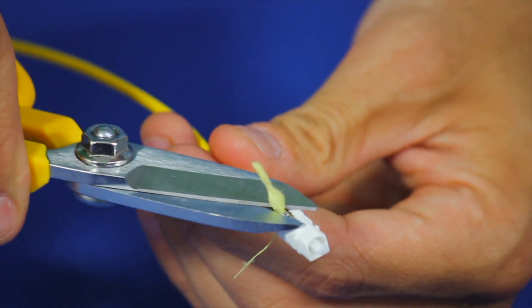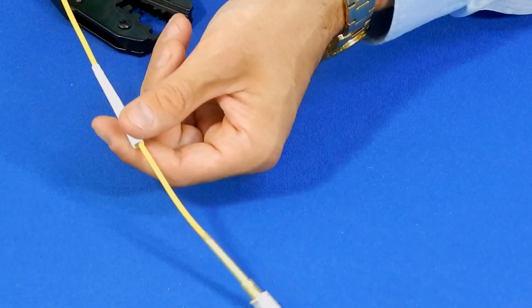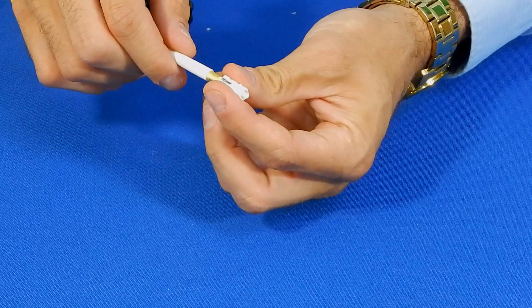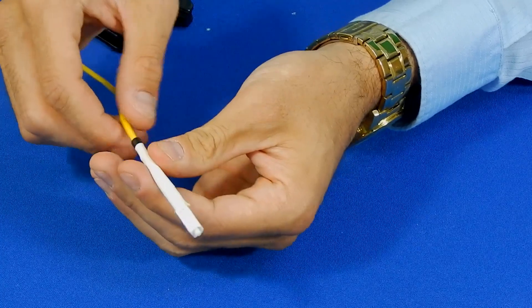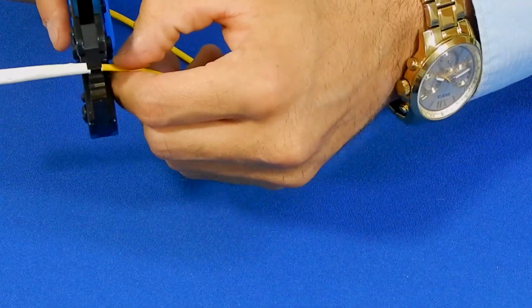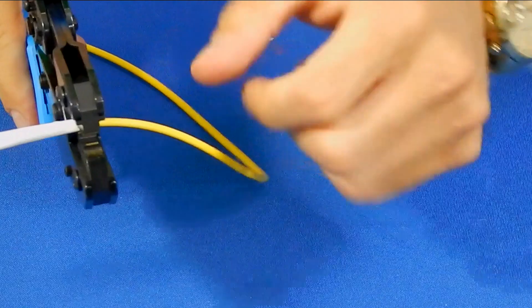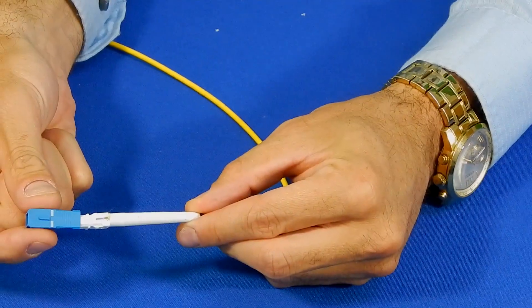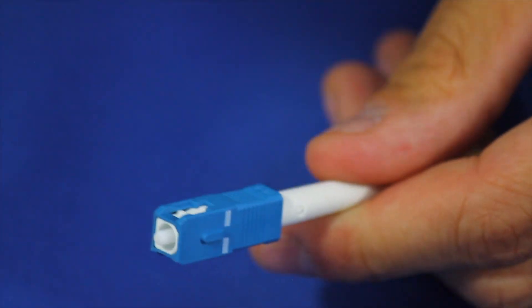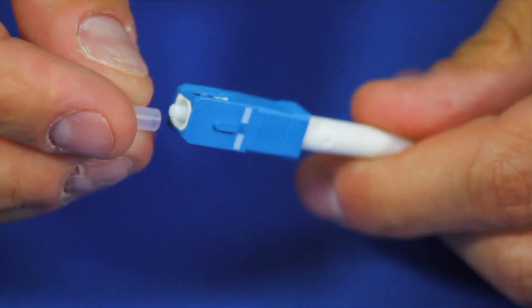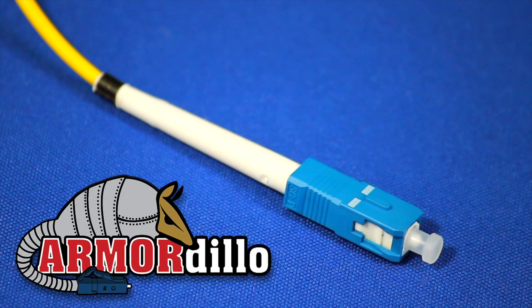Remove any excess Kevlar. Slide the boot all the way toward the end of the connector until the crimp sleeve is no longer exposed. Crimp the back end of the boot. Apply the outer housing. You have successfully spliced the FIS 3mm Armadillo splice-on connector.